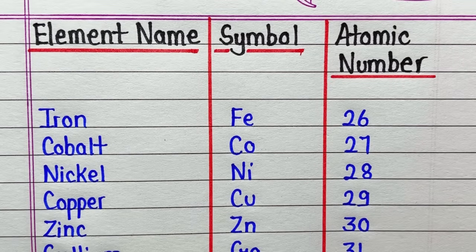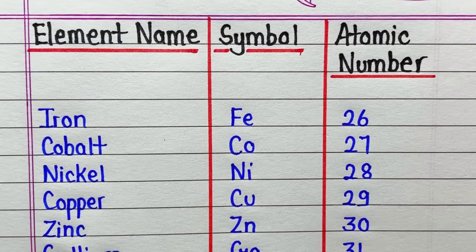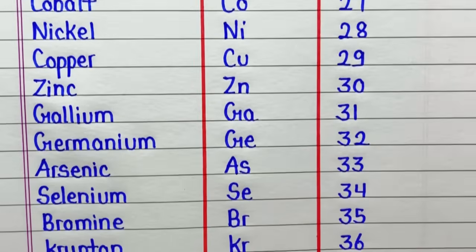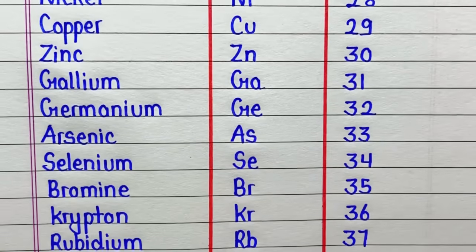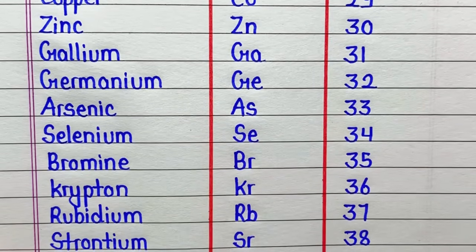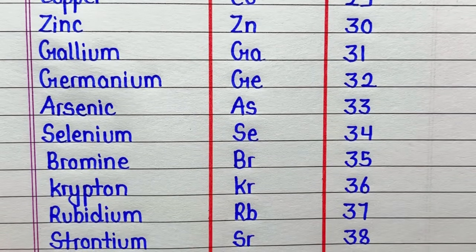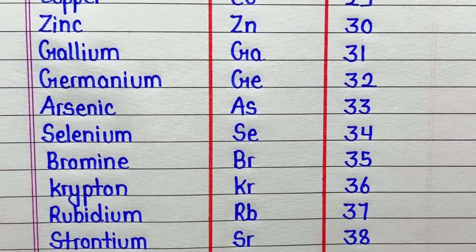Copper, symbol is Cu, atomic number is 29. Zinc, symbol is Zn, atomic number is 30. Gallium, symbol is Ga, atomic number is 31. Germanium, symbol is Ge, atomic number is 32.